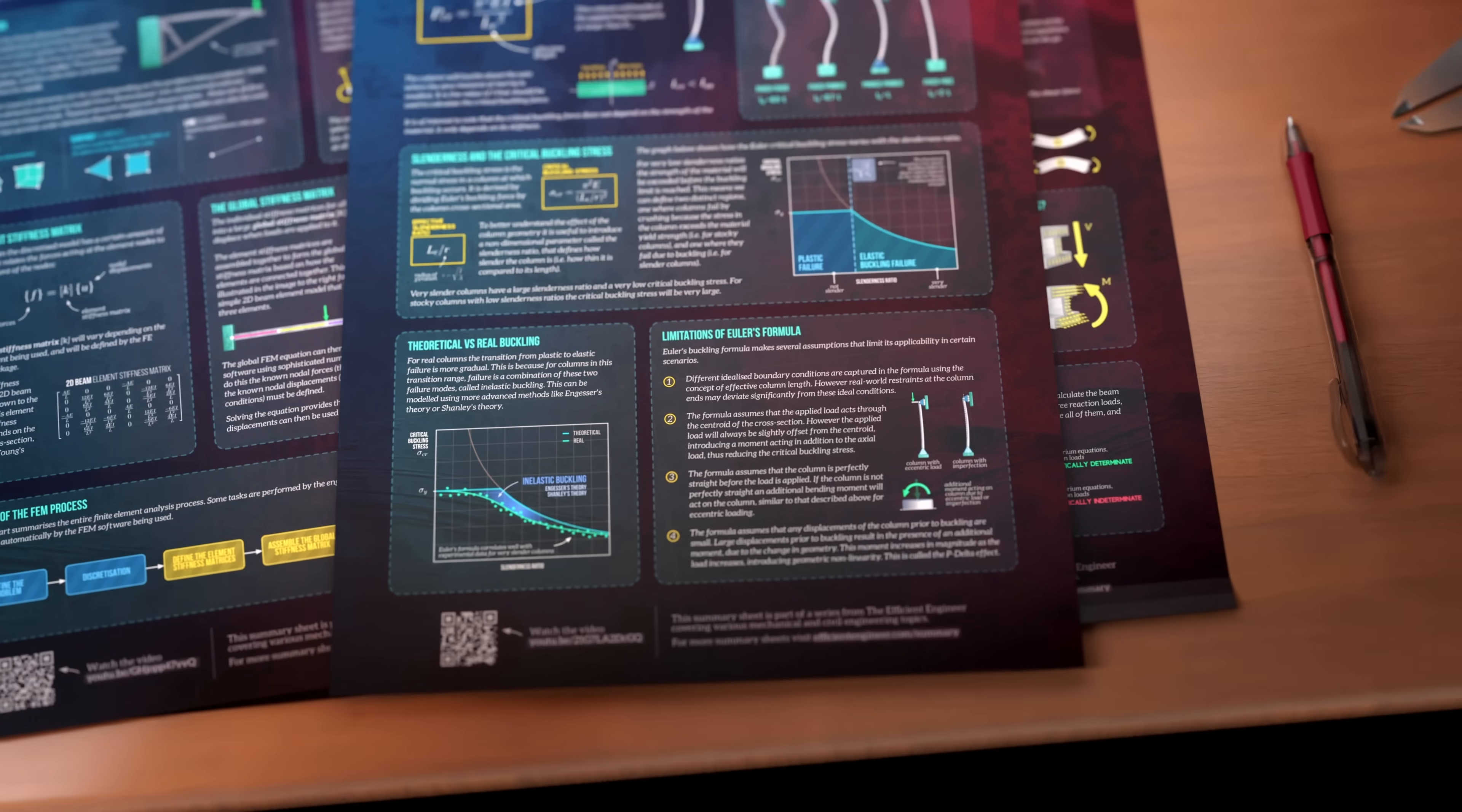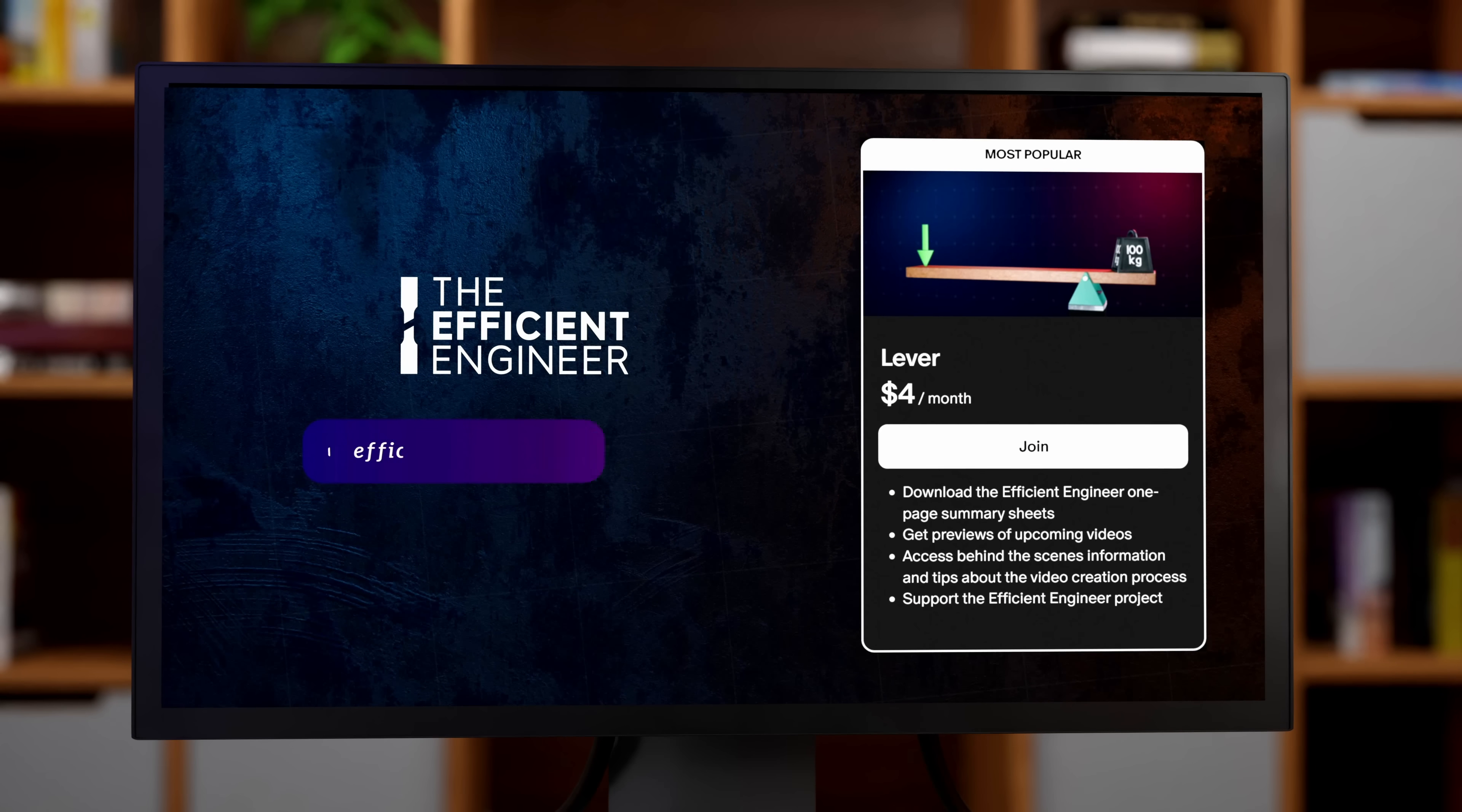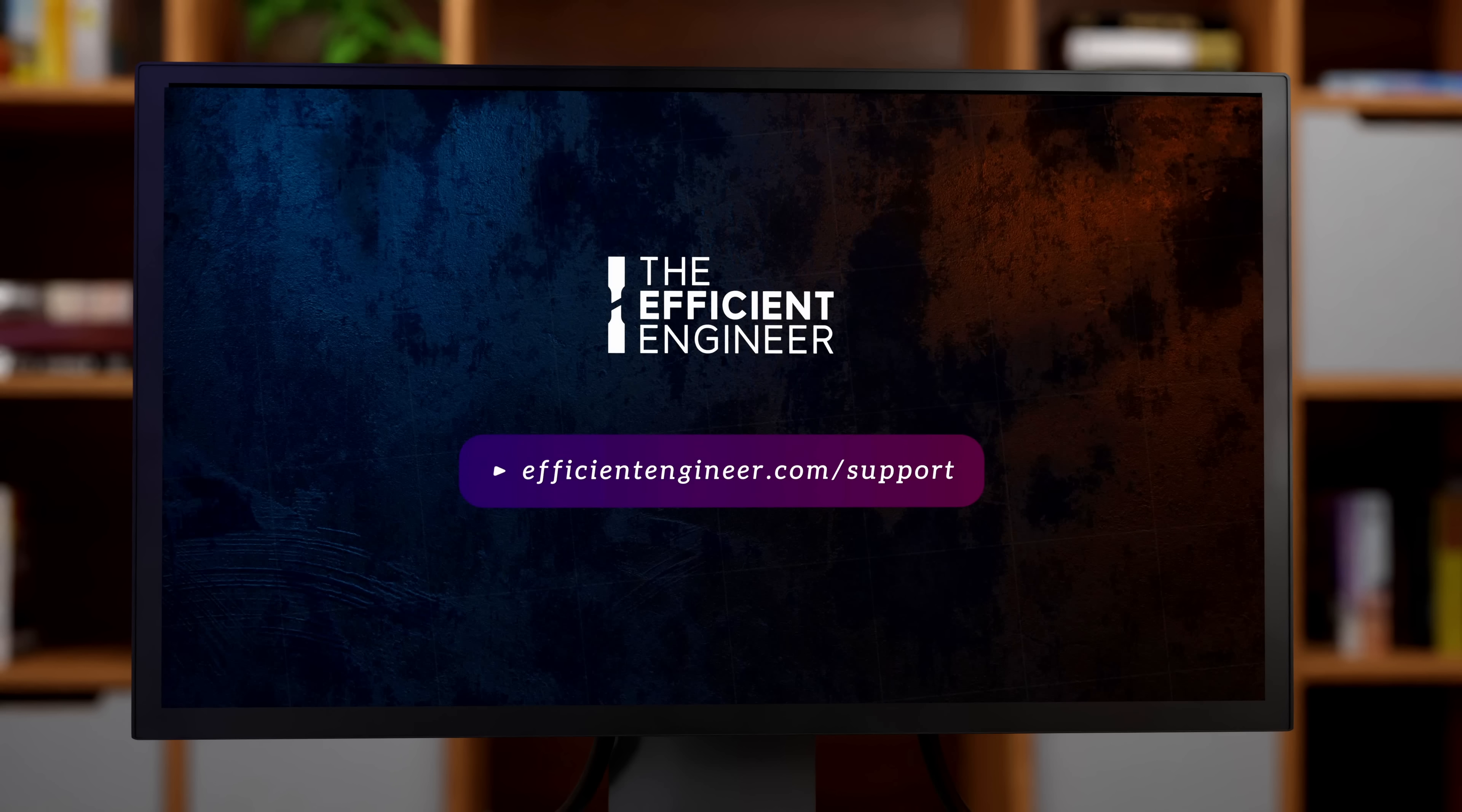All 14 summary sheets are available for free for anyone who supports the Efficient Engineer channel on Patreon, and that includes any new sheets I release in the future. As a supporter, you'll also get access to video previews and behind-the-scenes details showing how the Efficient Engineer videos are made. So head over to EfficientEngineer.com/support to join me on Patreon, get access to the full set of engineering summary sheets, and help me continue to create videos and develop resources for the engineering community.